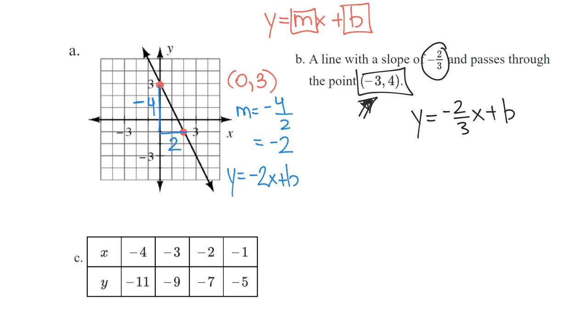Well, we know that points are written as an x and a y, so wherever I see an x, I can replace it with a negative 3.